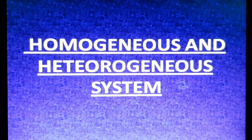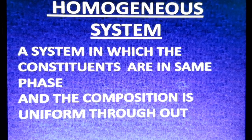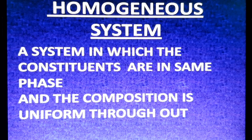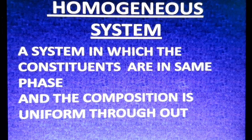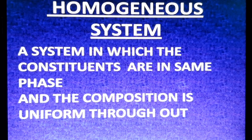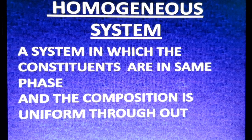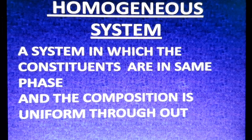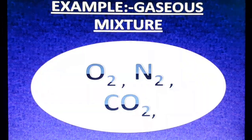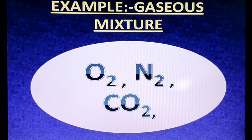The next types are homogeneous and heterogeneous systems. First, homogeneous system: a system in which the constituents are in the same phase and the composition is uniform throughout is called a homogeneous system. It has a single phase with uniform composition. For example, a gaseous mixture.